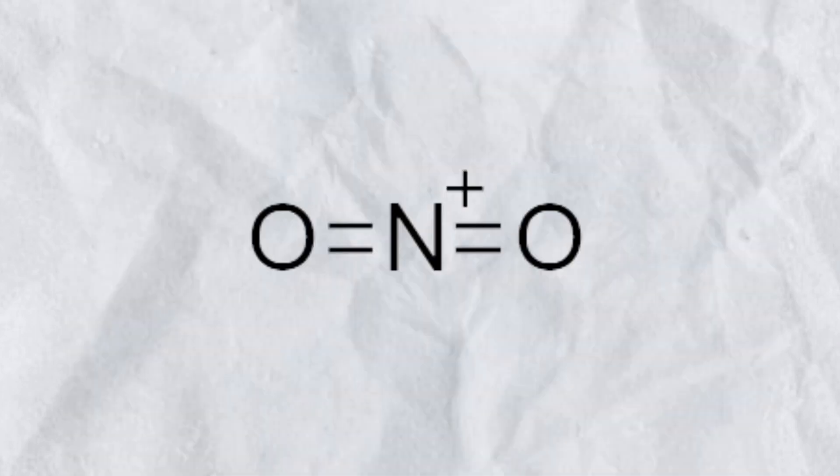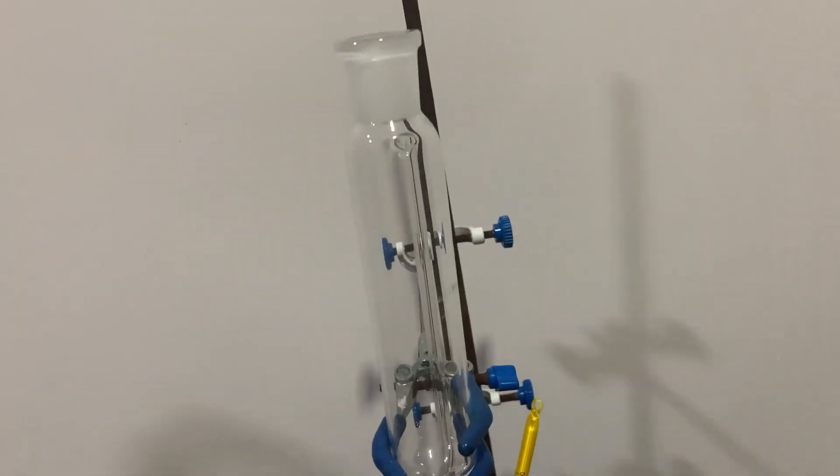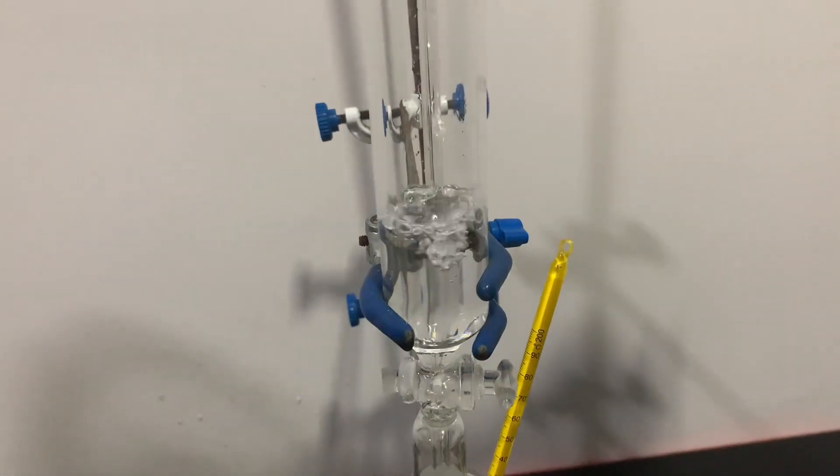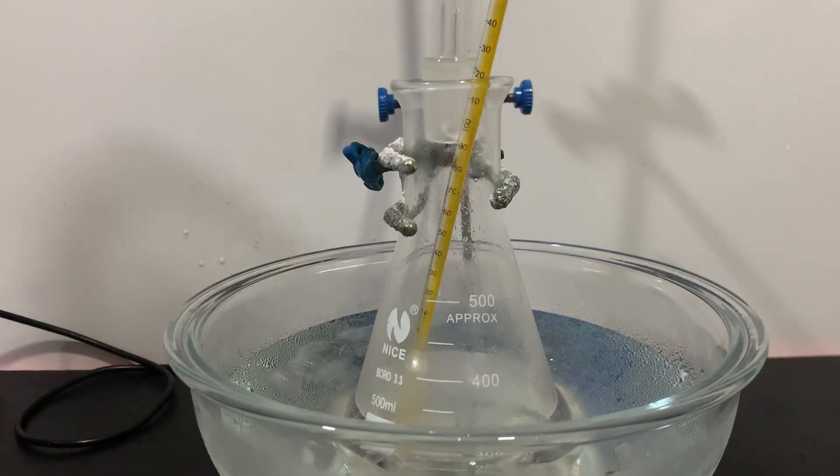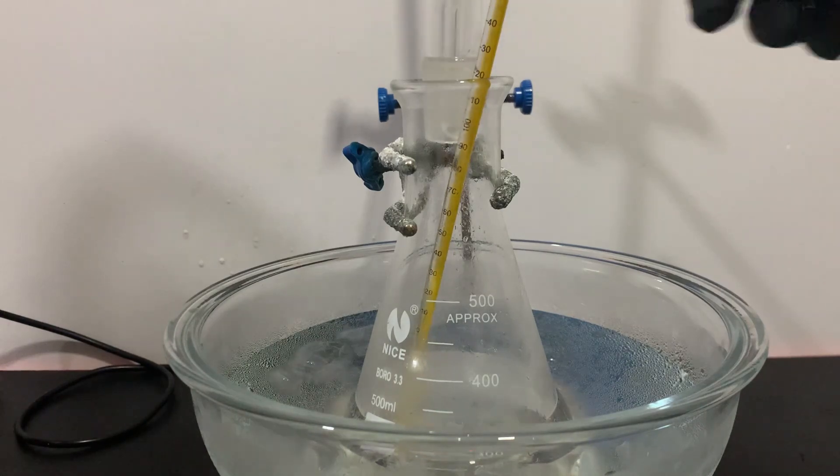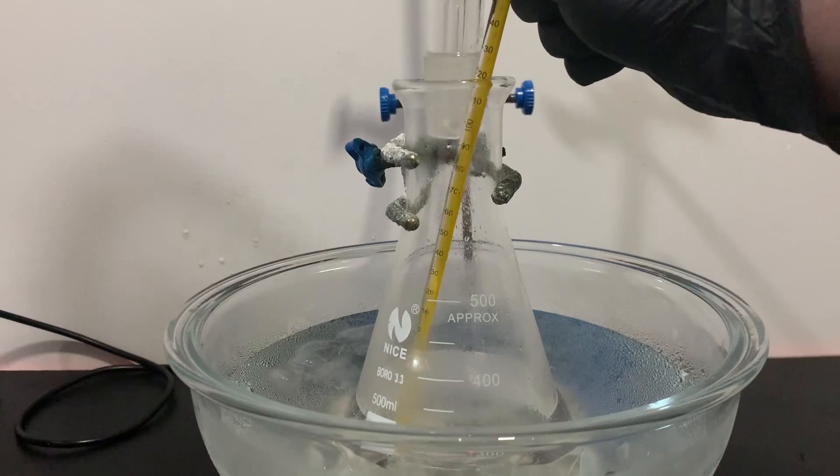This will then yield our desired nitronium ion. An addition funnel was charged with 57ml of benzene and the benzene was added dropwise to the nitrating mixture. The temperature was also kept below 50 degrees Celsius to prevent side products from forming.